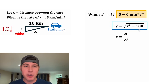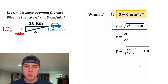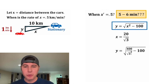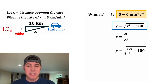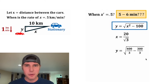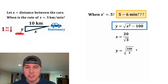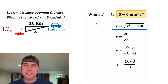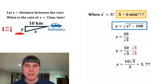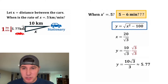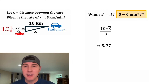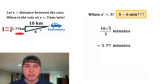Now we take x equals 20 over root 3 and plug it into y equals the square root of x squared minus 100. Squaring 20 over root 3 gives 400 over 3. Rewriting 100 as 300 over 3, we get the square root of 400 over 3 minus 300 over 3, which is the square root of 100 over 3. Distributing the square root to top and bottom gives y equals 10 over root 3, approximately 5.77. Since y grows at a rate of 1 kilometer per minute, traveling 5.77 kilometers means 5.77 minutes have elapsed. The exact instant the rate was half a kilometer per minute was at 10 root 3 over 3 minutes, approximately 5.77 minutes.